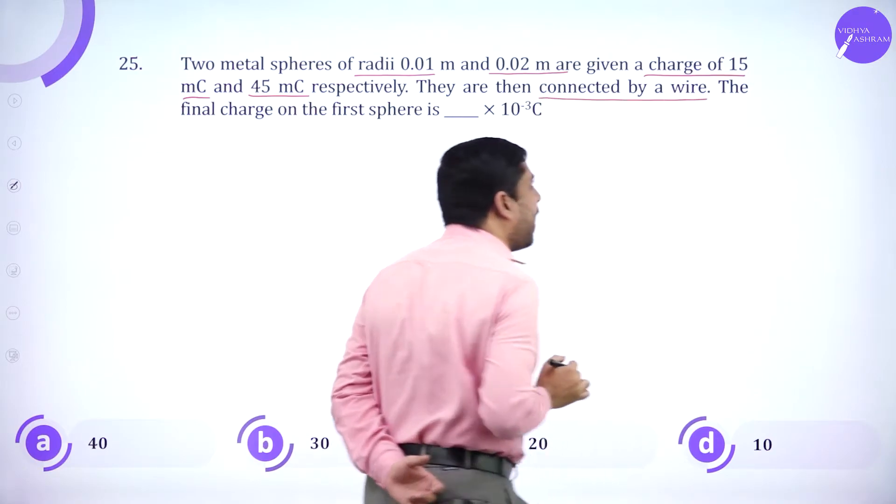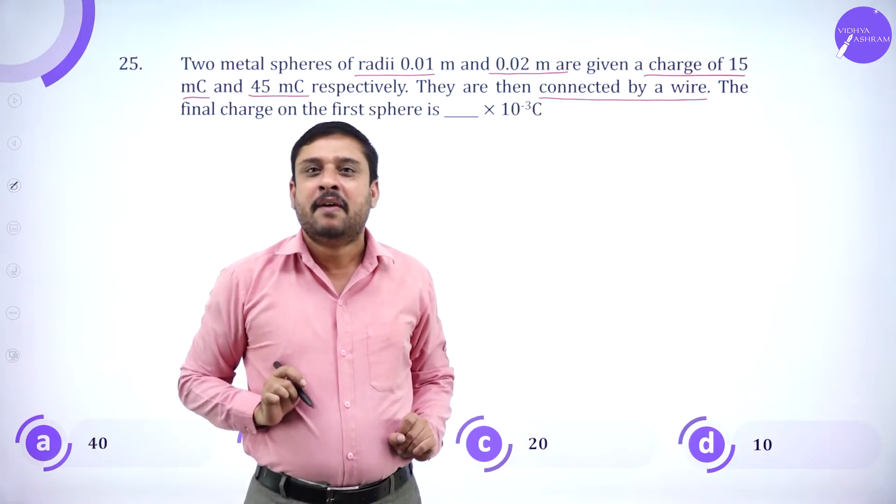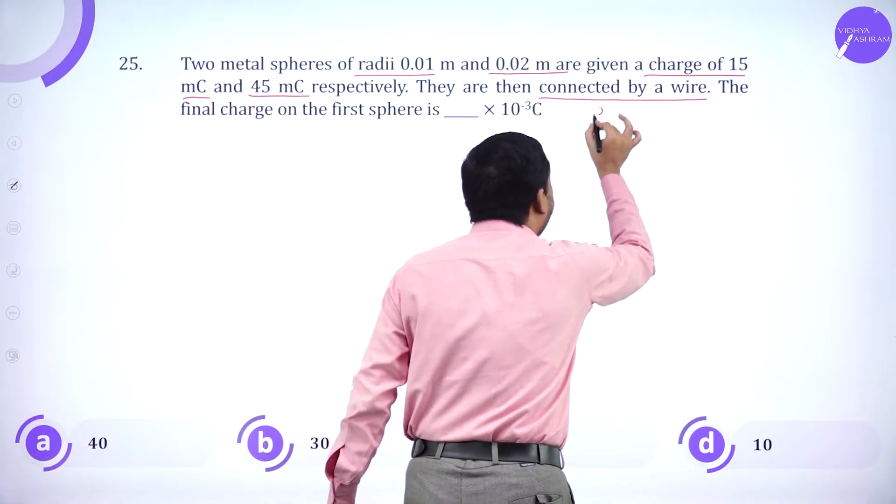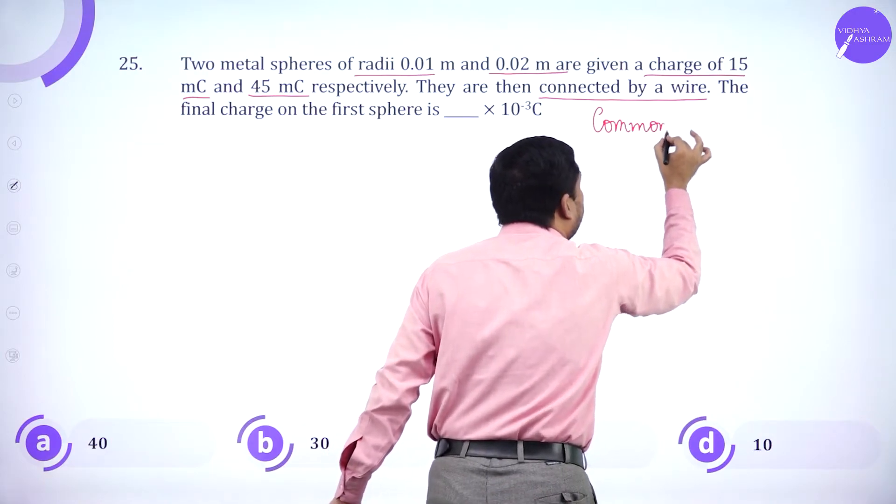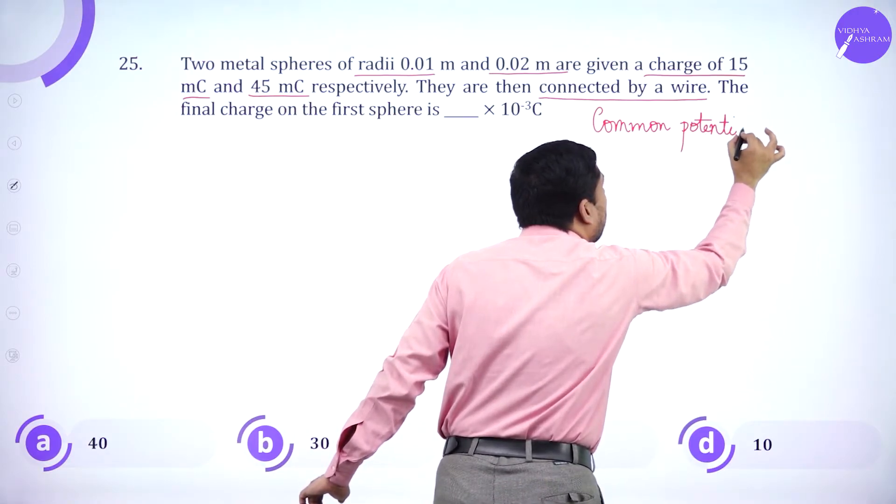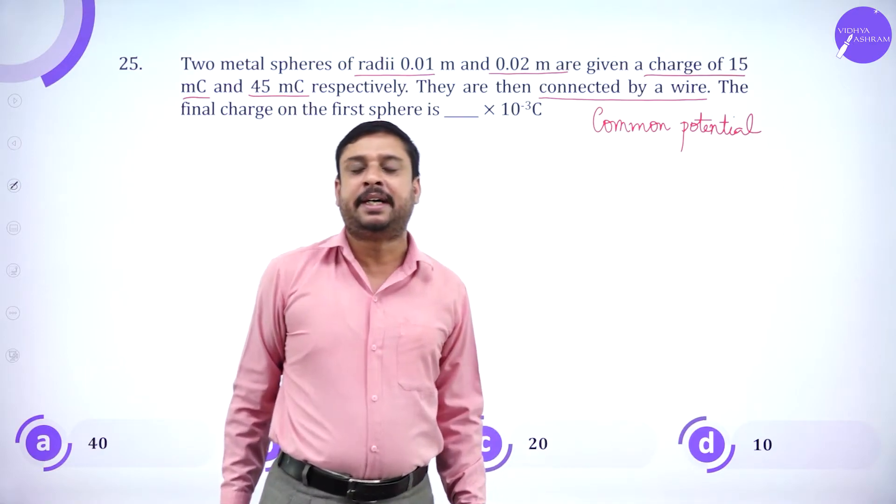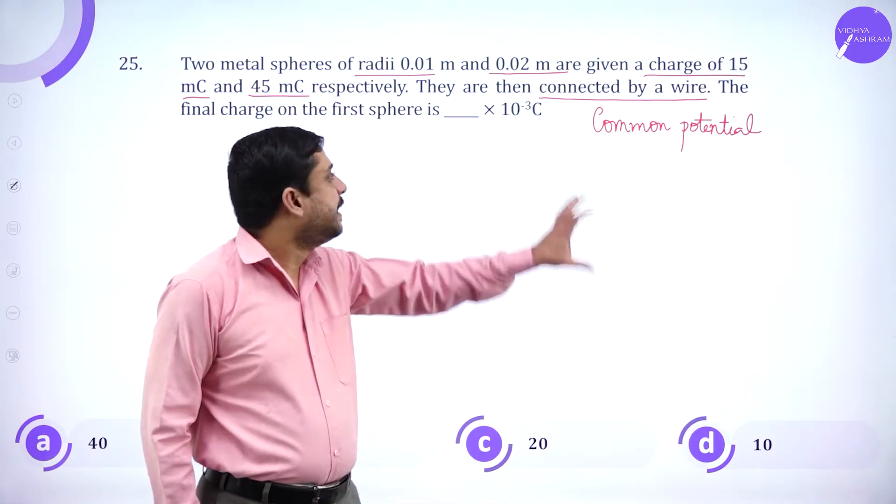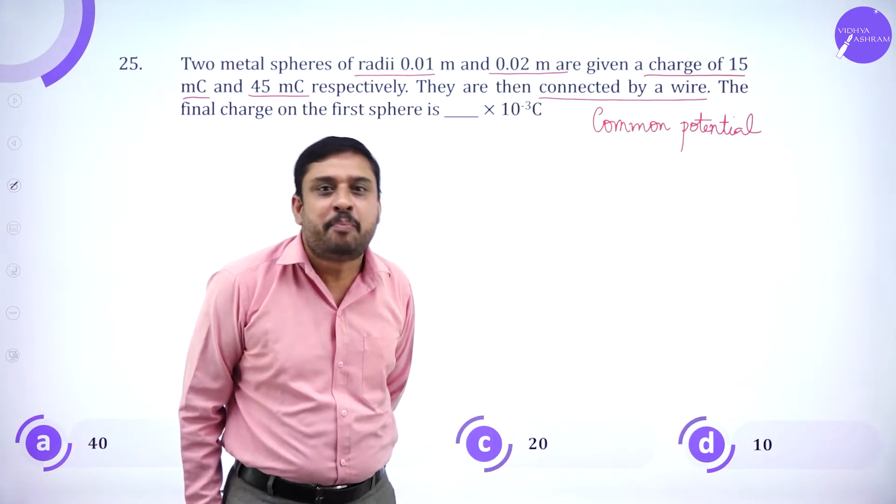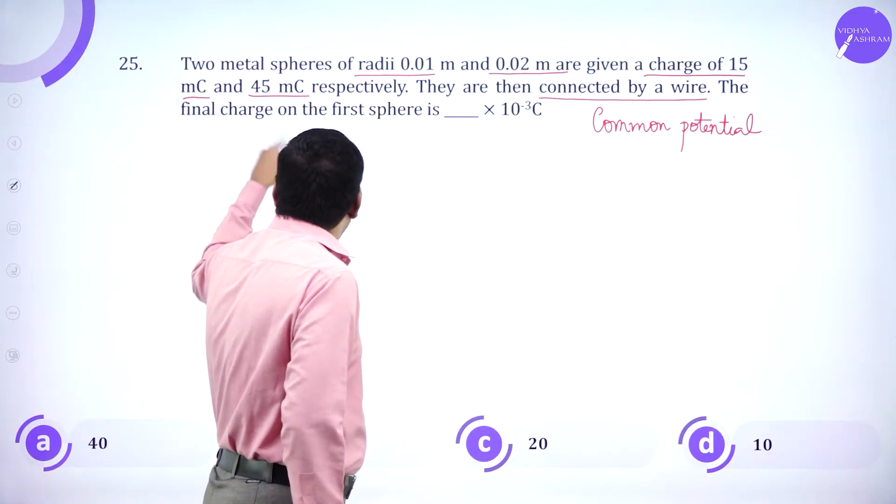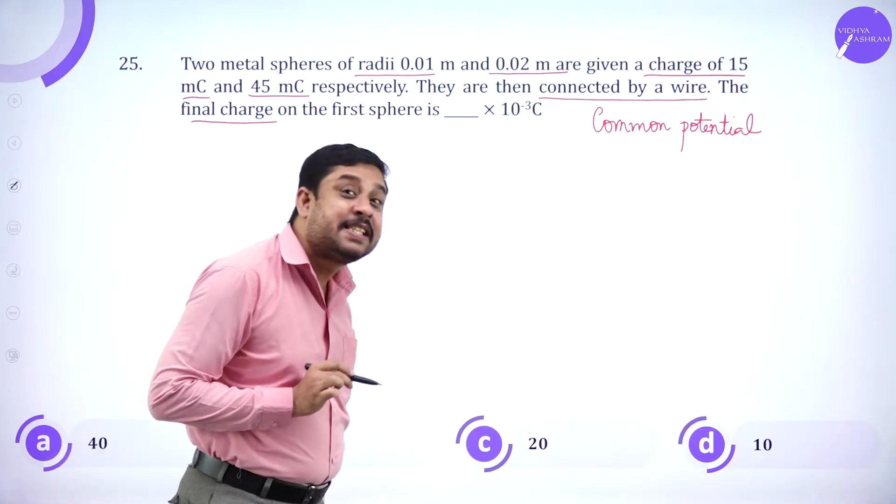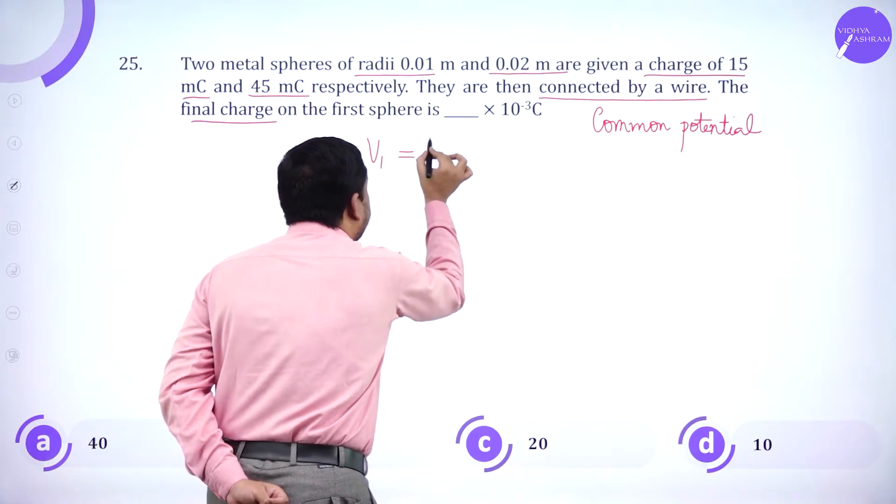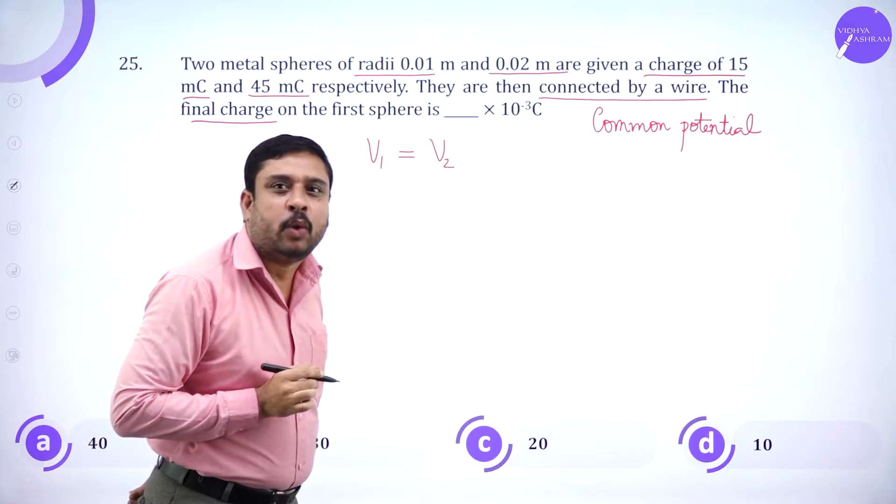They are connected by a wire. Here lies the hint. When two spheres are connected by a wire, what does that imply? It will imply that both of them will have a common potential or same potential. Please do remember, wherever they say two spheres connected by a same wire, that means both of them will have a common potential.